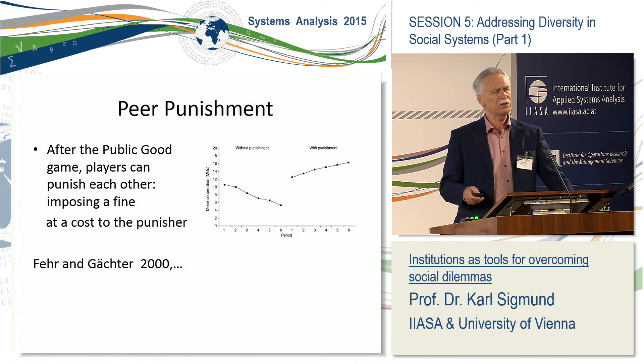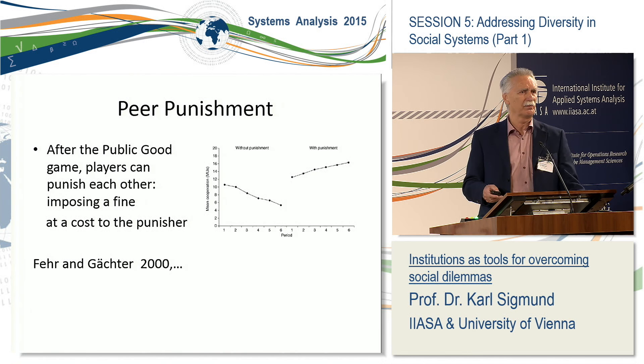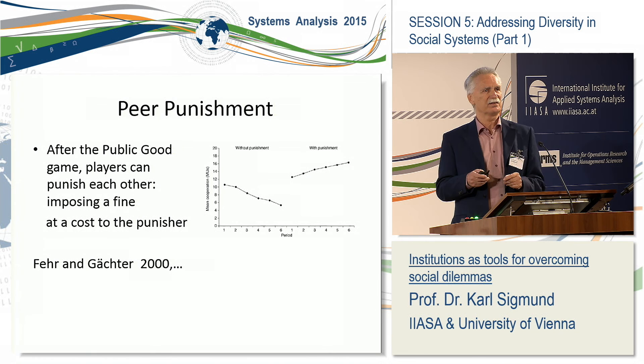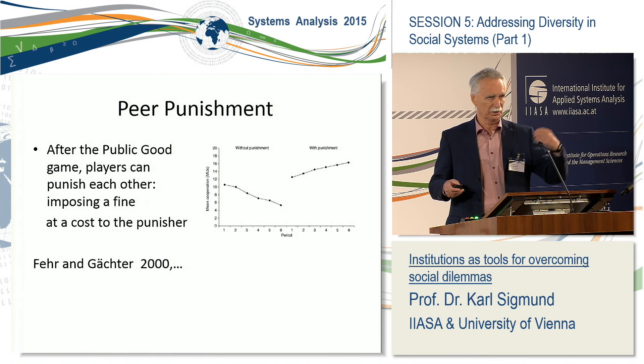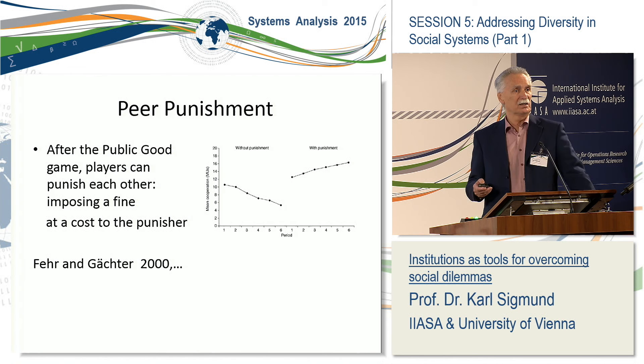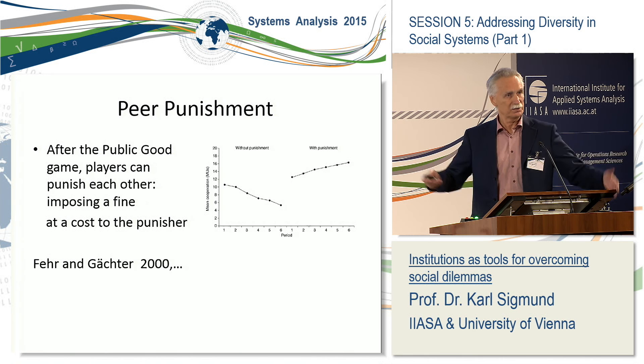In theory, however, there are some problems about this. In particular, players can now free ride not on the contributions of others but also on the punishment of others. Because punishment is costly — if you execute punishment, you have to pay something. It is costly for an individual to impose a punishment on someone else.